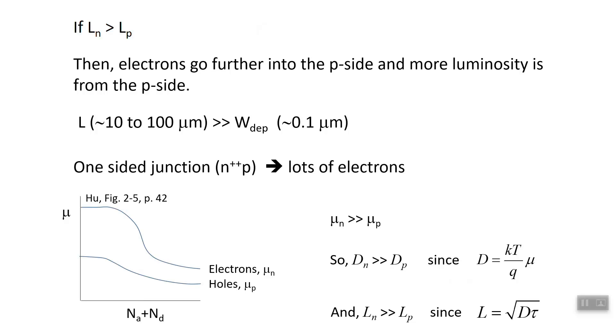So by making a junction that has a lot of electrons—that is, the n-side is heavily doped—we have a lot of electrons that can diffuse a long way into the p-side, meeting up with a lot of holes and producing a lot of photons, giving us a very luminous LED.